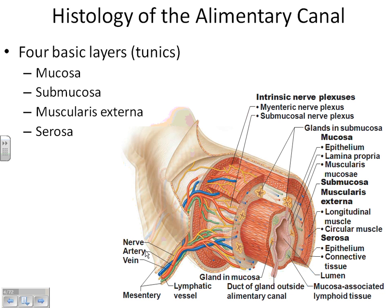The last layer is the serosa. It is continuous with all the serous membranes in the abdomen. When you dissected your pig in lab and cut it open, the intestines didn't just all fall out into one long piece — they were held together by the serosa, that outside layer. You had to pull and tear it to get everything out. The small intestine of a pig, when you pull it out, is surprisingly long.